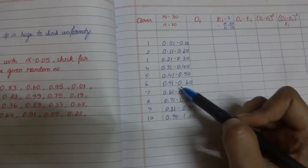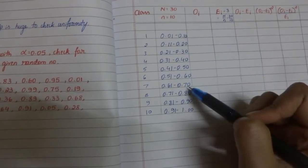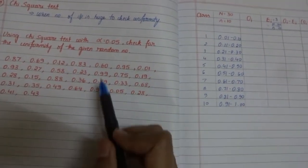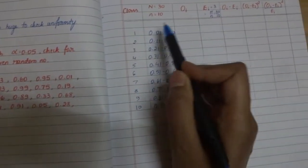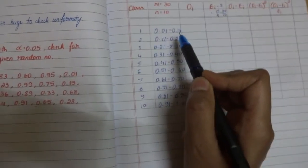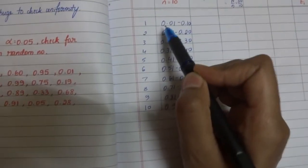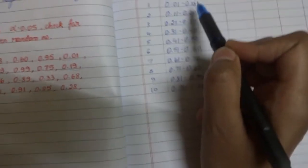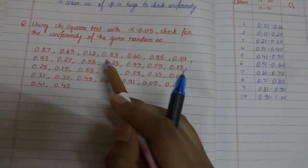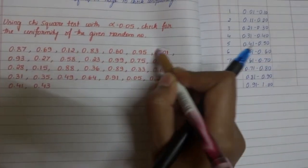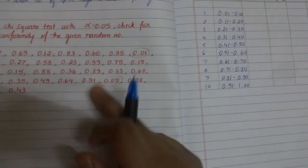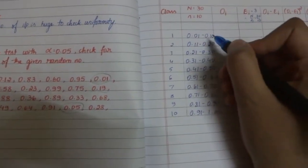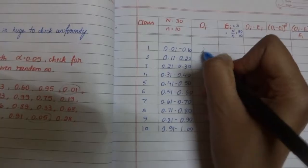Now that we have divided it into different ranges, we have to count the number of random numbers that fall in that particular range. For example, if you take from 0.01 to 0.10, there are two values. There are two random numbers that fall in that range, so you write 2 here.